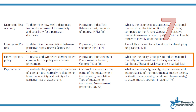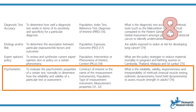Another type is the systematic review of expert opinion or policy, which reviews and synthesizes current expert opinion, text, or policy on a certain phenomenon. For example: what are the policy strategies to reduce maternal mortality in pregnant or birthing women in Cambodia, Thailand, Malaysia, and Sri Lanka? The psychometric systematic review aims to evaluate the psychometric properties of a certain test — normally to determine the reliability and validity of a particular test or assessment. For example: what is the reliability, validity, responsiveness, and interpretability of methods such as manual muscle testing, isokinetic dynamometry, and handheld dynamometry to assess muscle strength in adults?